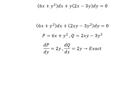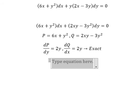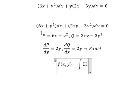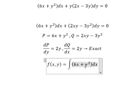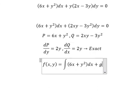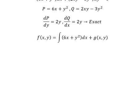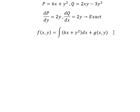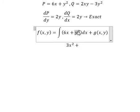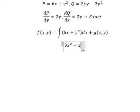Now I need to set up the function f(x,y). I will use the integration of P dx plus g(x,y). The integration of 6x gives 3x squared. The integration of y squared, treating this as a constant, gives xy squared.